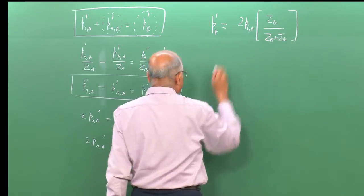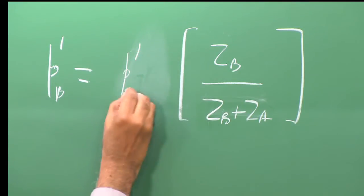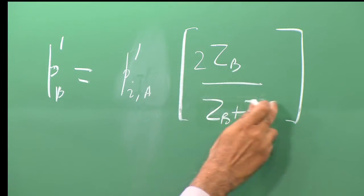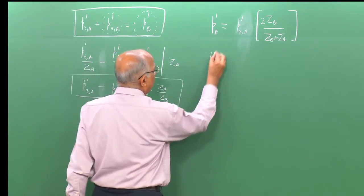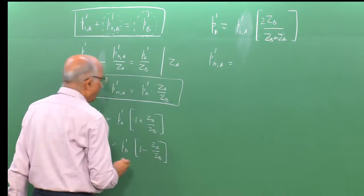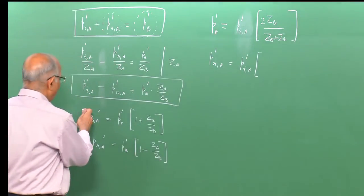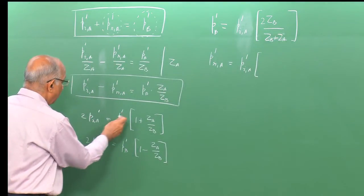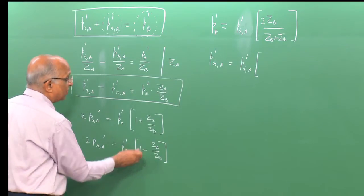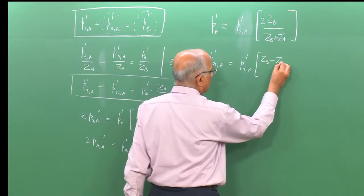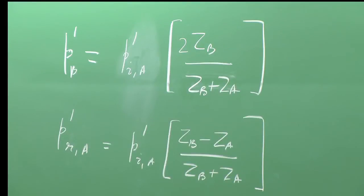Substituting back to get the reflected value: p_ra prime = p_ia prime × (Z_b − Z_a) / (Z_b + Z_a). The factor of 2 cancels and we arrive at the reflected pressure formula in terms of the impedance ratio.